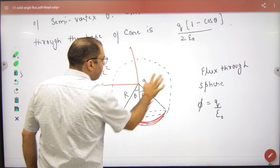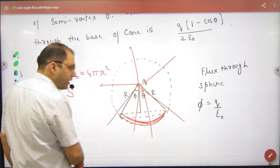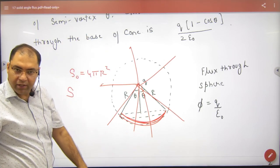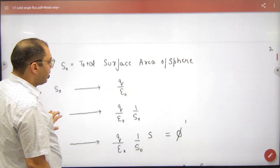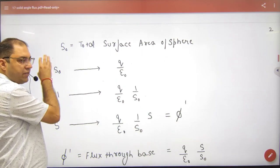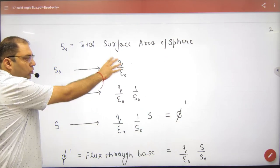The field lines will go all the way through. So if the total surface area is S₀, then the total flux is Q/ε₀.